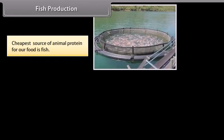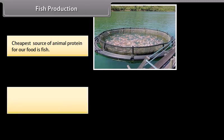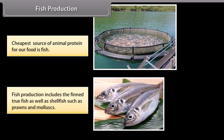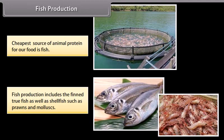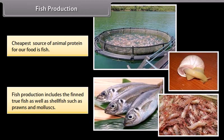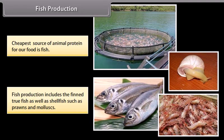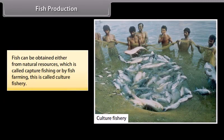Fish is the cheapest source of animal protein for our food. Fish production includes true fin fish as well as shellfish such as prawns and mollusks. Fish can be obtained either from natural resources, which is called capture fishing, or by fish farming, which is called culture fishery.